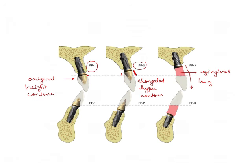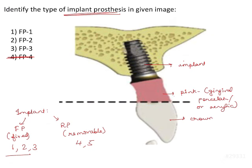These are the examples of FP1, FP2, and FP3 restorations. Coming back to the question — which one is this? This has gingival porcelain, so it is easy to identify: it is an FP3 implant prosthesis.